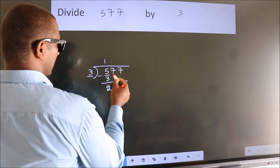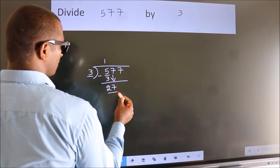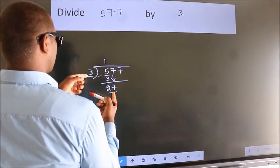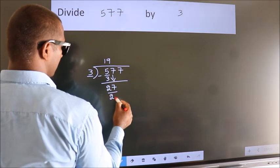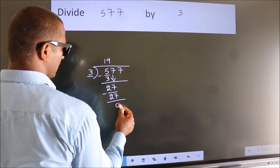After this, bring down the beside number. So, 7 down. So, 27. When do we get 27 in 3 table? 3 nines 27. Now, we subtract. We get 0.